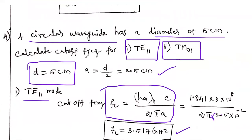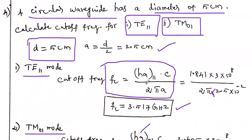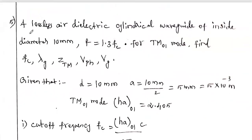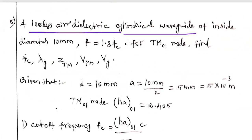We have calculated two cutoff frequencies for two different modes. Now the second question: a lossless air-dielectric cylindrical waveguide — cylindrical waveguide means it is a circular waveguide — has an inside diameter of 10 millimeters. Note that the diameter is given in millimeters; you must convert it to meters first.